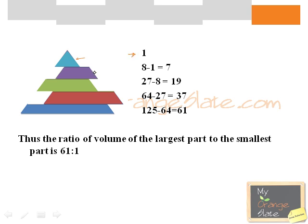the volume of the second part becomes 8 minus 1, which equals 7. The volume of the third part becomes 27 minus 8, which is 19. And the volume of the largest part becomes 125 minus 64, which equals 61.